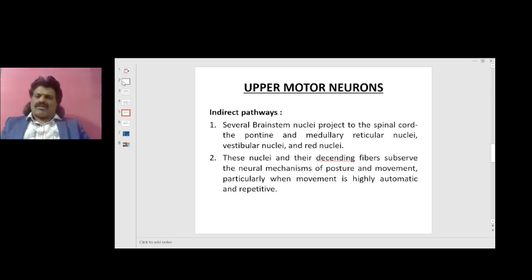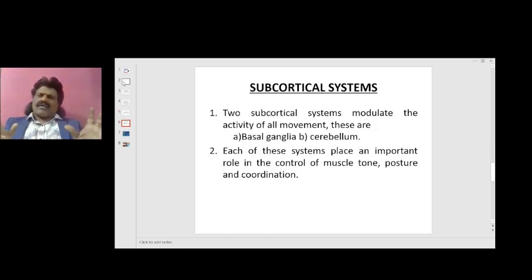Now we'll talk about the indirect pathways of upper motor neurons. Several brainstem nuclei project to the spinal cord: the pontine and medullary reticular nuclei, the vestibular nuclei, and red nuclei. These nuclei and their descending fibers subserve the neural mechanisms of posture and movement, particularly when movement is highly automatic and repetitive, as in walking. The two subcortical systems which modulate the activity of all these movements are basal ganglia and cerebellum. Each of these systems plays an important role in the control of muscle tone, posture, and coordination.